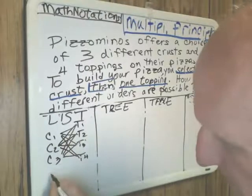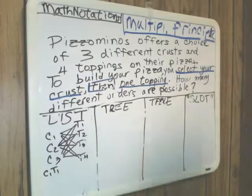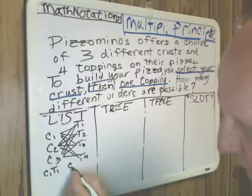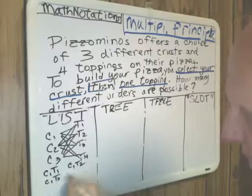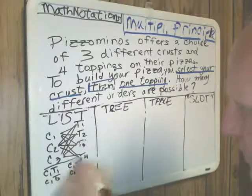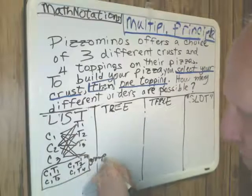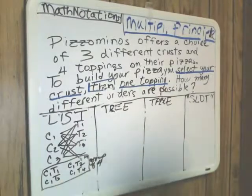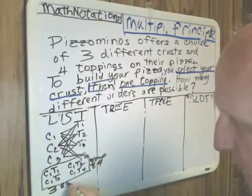Many students will just list it straight out. Crust one, topping one is one of the possible ways of building your pizza. We stay with crust one and go to topping two, then crust one topping three, crust one topping four. So here you have a group of four. We could then make a second group of four using crust two, and then a third group of four using crust three. So what we have are three groups of four.